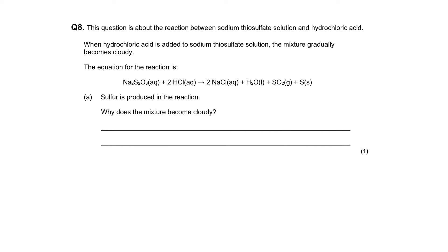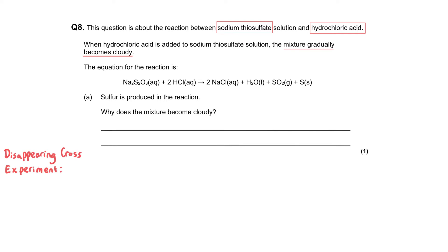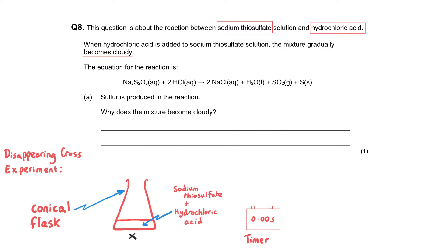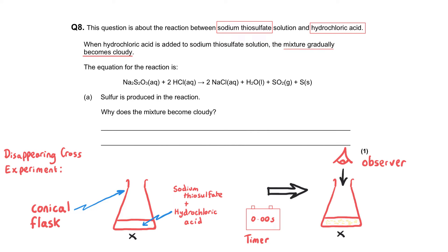This question is about the reaction between sodium thiosulfate solution and hydrochloric acid. When hydrochloric acid is added to sodium thiosulfate solution, the mixture gradually becomes cloudy. You might recognize these chemicals — they are the ones mixed together in the disappearing cross experiment. You mix them together, start the timer, and gradually a cross placed underneath the conical flask is no longer visible to the observer looking down through the contents of the flask.